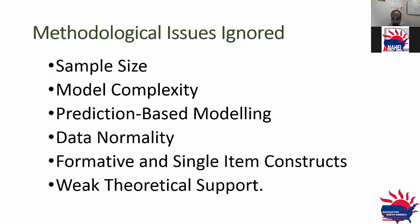Since CB-SEM is a covariance-based approach, it normally requires a larger sample size in order to have acceptable model fit statistics. But people use CB-SEM without considering sample size. A general rule of thumb is that you should have at least 10 respondents for each item in your questionnaire. As editors and assistant editors of several journals, we have seen that quite a lot of people use sample sizes of 200 to 300 respondents with very complex models, resulting in problematic findings. This issue is normally ignored by researchers.